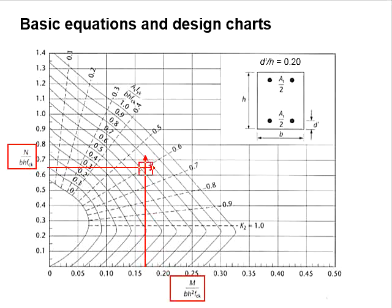Then you obtain the value based on the functions of As fyk / bh fck. From there, you can calculate backward to substitute back these symbols to obtain the amount of reinforcement bar required for the column section.